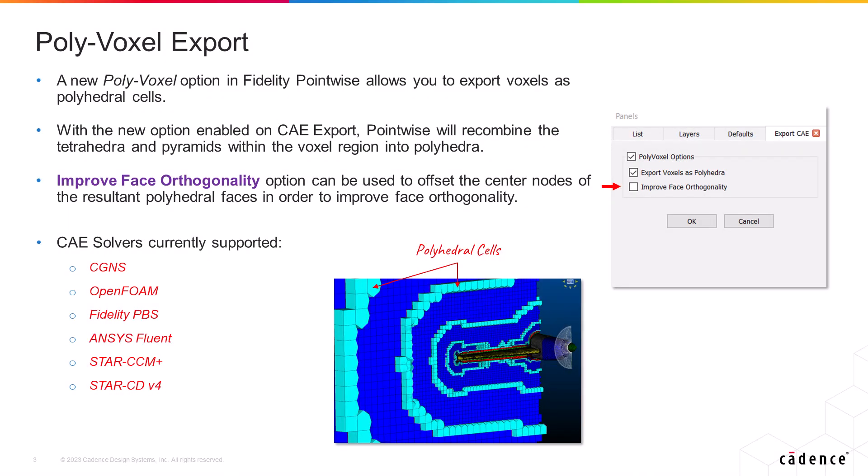In Fidelity Pointwise 2023.1, a new polyvoxel option is introduced for CAE grid export. This option allows you to export voxels as polyhedral cells. More specifically, Pointwise will recombine the tetrahedral cells and pyramids within the voxel transition region into polyhedra, which are basically hexahedral cells with hanging nodes.